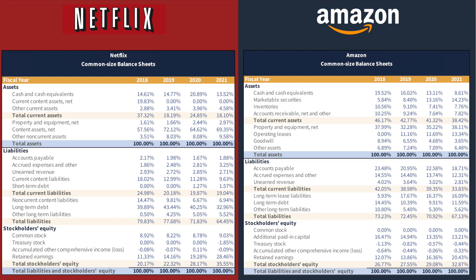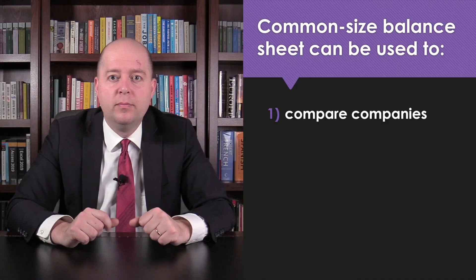After dividing long-term debt by total assets, we see that one-third of Netflix's assets were funded by long-term debt, compared to just 11% for Amazon. Thus, Netflix is a lot more reliant on long-term debt than Amazon, even though Netflix has less long-term debt in absolute terms.